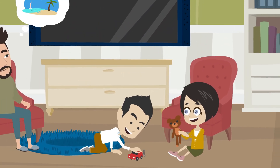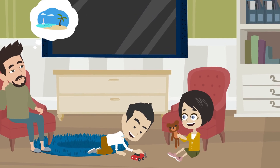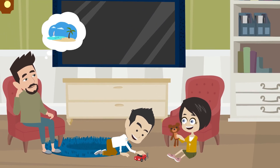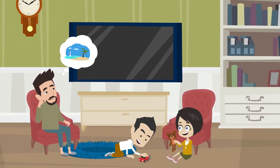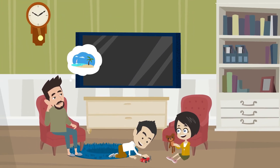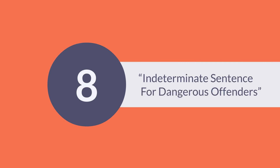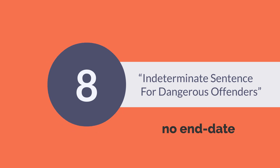It is unlikely that an intermittent sentence will be considered if you have previously broken a probation order. The eighth type of punishment is an indeterminate sentence for dangerous offenders. This type of sentence has no end date, and the Parole Board of Canada will review the case after seven years and every two years afterwards.